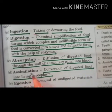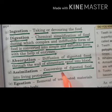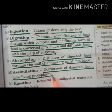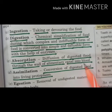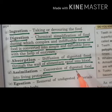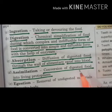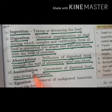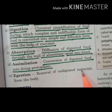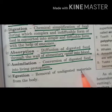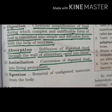Fourth is assimilation — the conversion of digested food into living protoplasm. The food which is digested and absorbed by the wall of the alimentary canal enters the blood, and through the blood it reaches each and every cell of the body, where it is converted into living protoplasm. Fifth is ejection — the removal of undigested material from the body.